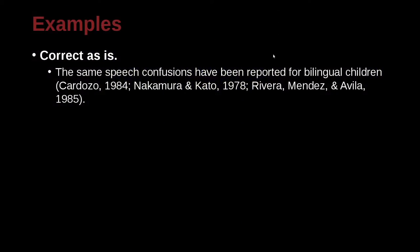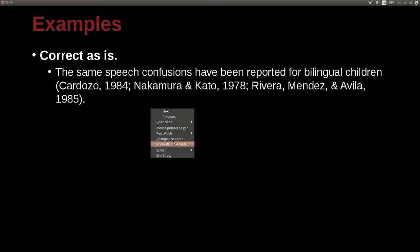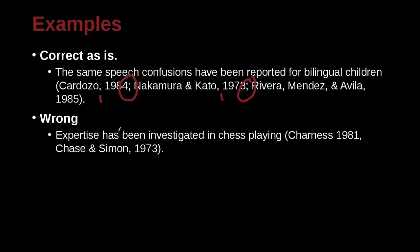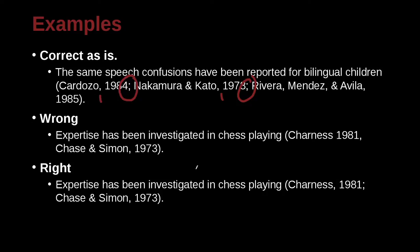The same speech confusions have been reported for bilingual children — Cardozo — and here we have the citations in APA style. You separate them with a semicolon, with a comma after the name but before the date. Expertise has been investigated in chess playing, and here you can see for APA style you need the comma — note the missing comma — and then the colon in between the different citations.